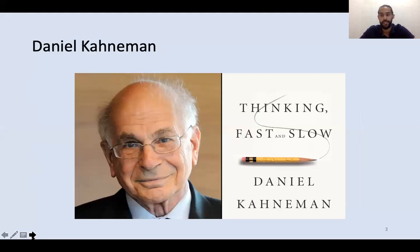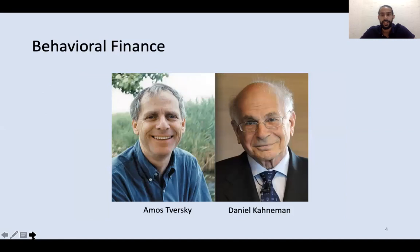This is Daniel Kahneman. He's an Israeli psychologist who wrote a great book called Thinking Fast and Slow. In 2002, he won the Nobel Prize in Economics for his work on Prospect Theory. What's fascinating is that Kahneman is not an economist — he's a psychologist. The field of Behavioural Finance was born from the academic work of Daniel Kahneman and his friend Amos Tversky, and it uses psychology to explain investor behavior and market inefficiencies.